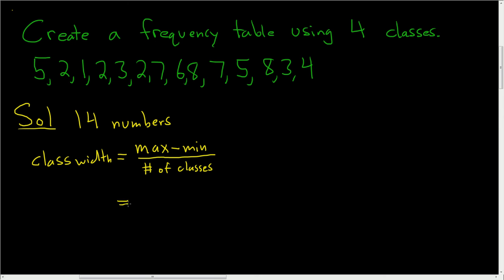So here the max is 8, that's the biggest number. The min is 1, that's the smallest number. And we're told to use 4 classes, so we divide by 4. This is equal to 7 over 4, which is 1.75. And we have whole numbers, so we have to round up no matter what to the next whole number. So the class width, in this case, is equal to 2.